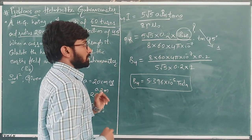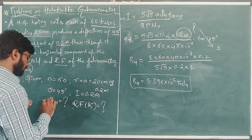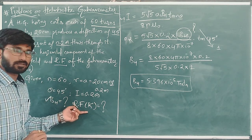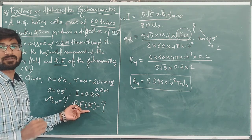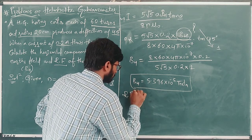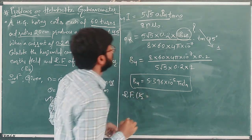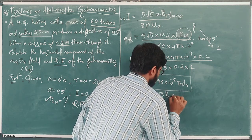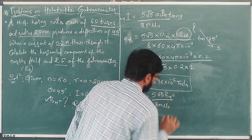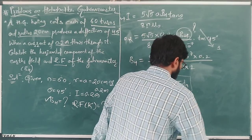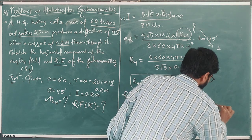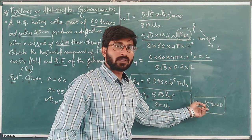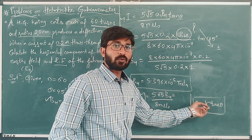Now we need to find the reduction factor K. We know that the current through the Helmholtz galvanometer can be written as I = K × tan θ. From this, the reduction factor K = (5√5 × BH × r) / (8 × N × μ₀).